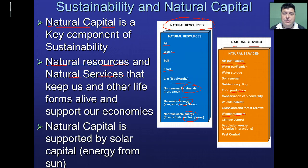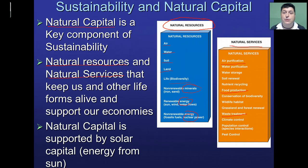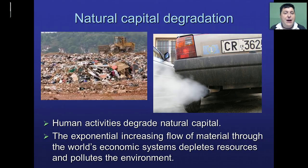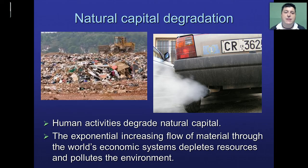What keeps natural resources forming and natural services being produced is the sun. The sun is one of the major driving forces behind many natural processes, so we say that natural capital is supported by solar capital — solar energy. As we consume natural capital, producing items and making waste, the capital is being degraded. We're depleting resources and polluting the environment, and if we're going to be sustainable, we need to find that balance so that we degrade less natural capital and use it more efficiently.